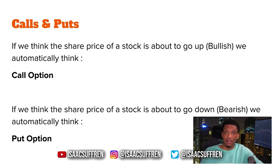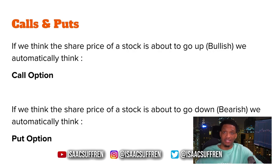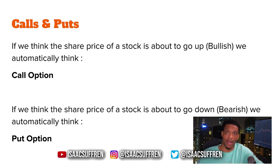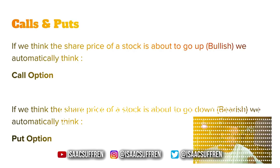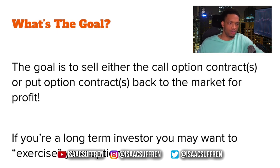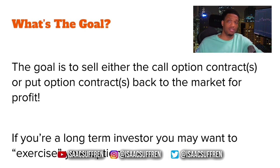If you see a stock and you're like, 'oh this can go up $10,' then you're going to want to place a call option on that. If you look at a stock and say, 'this stock has the potential to run up $10,' you want to buy a call option. If you look at a stock and say, 'this has the potential to run down some dollars,' you want to buy a put option. That simple — call means up, put means down. The goal is to sell the call or put option contracts back to the market for profit.